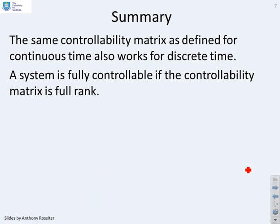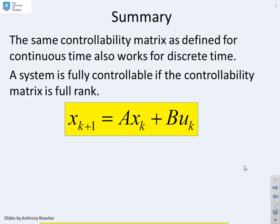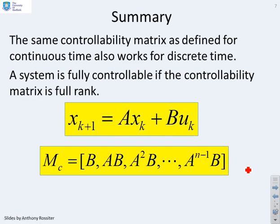In summary, the same controllability matrix as defined for continuous time also works for discrete time. The system is fully controllable if the controllability matrix is full rank. For a system like this, the controllability matrix is b, ab, a squared b, all the way up to a to the n minus 1b. We just need to test the rank of this matrix.